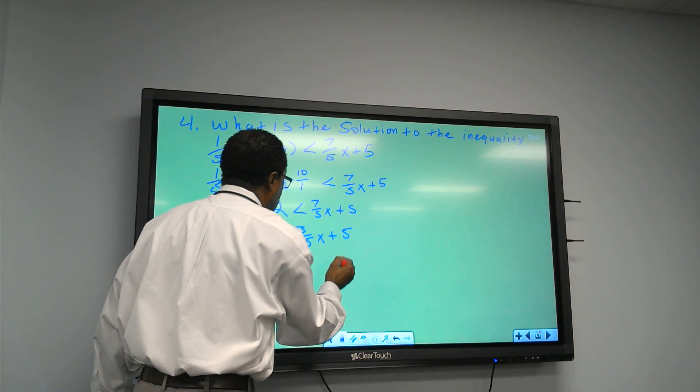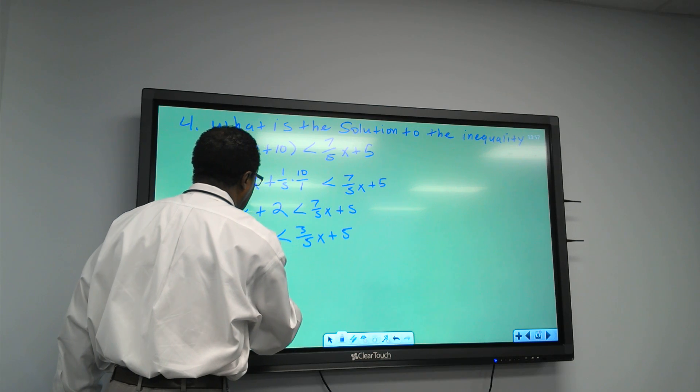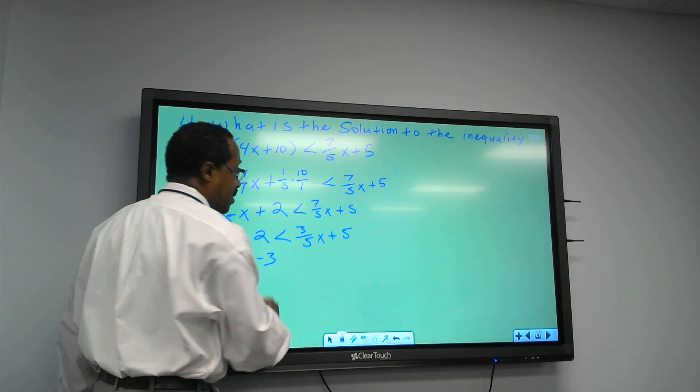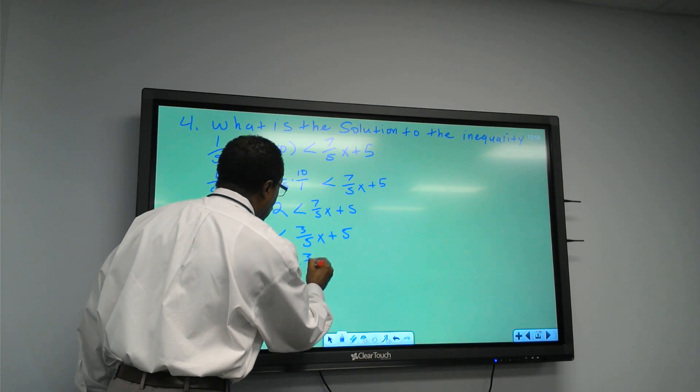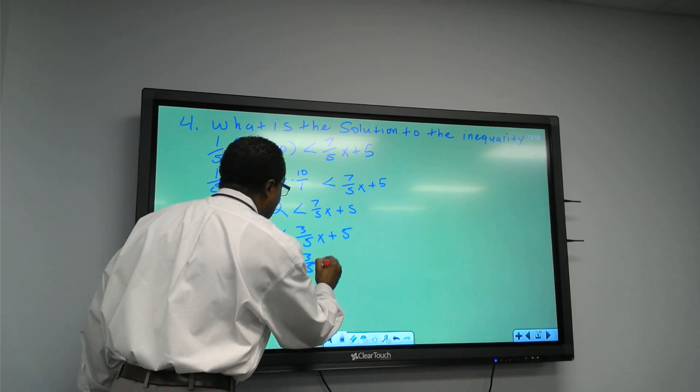Then I'm going to subtract 5 from this side and put it over here. Right? So if I subtract 5, I'm going to get a negative 3. It's less than 3 over 5x.